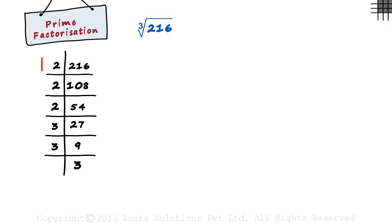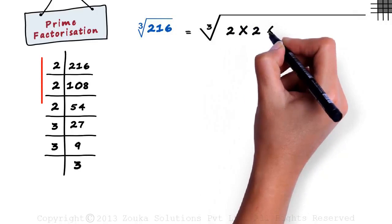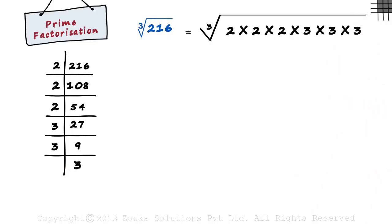216 will equal the product of all these numbers. We can write cube root of 216 as cube root of 2 multiplied by 2 multiplied by 2 multiplied by 3 multiplied by 3. Remember, do not forget to include the prime number which is left at the bottom.